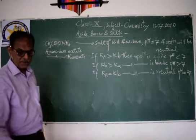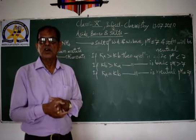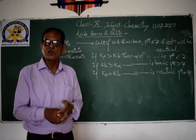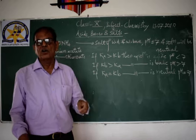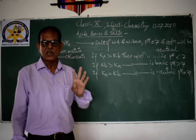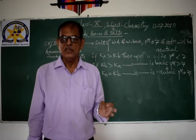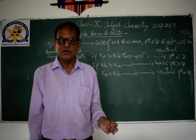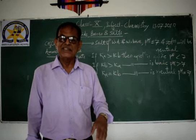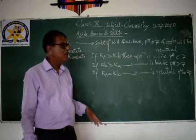If Ka is greater than Kb, the aqueous solution is acidic. If Kb is greater than Ka, the aqueous solution is basic. If Ka equals Kb, then the aqueous solution is neutral — pH equal to 7. In this way we can identify the nature of different salts: salt of strong acid and strong base, salt of strong acid and weak base, salt of weak acid and strong base, and salt of weak acid and weak base.